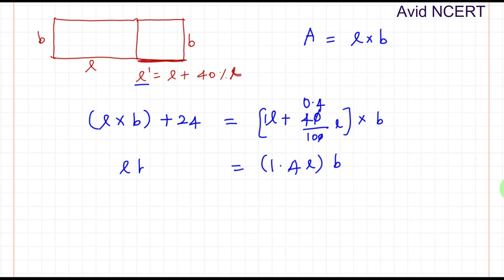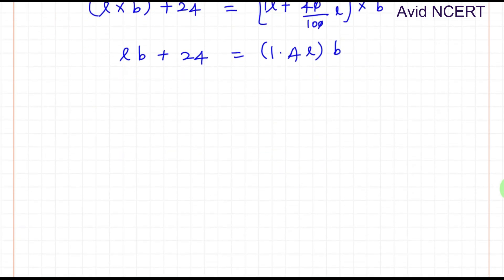So LB plus 24 equals 1.4LB. Rearranging the equation, 1.4LB minus LB equals 24. So 0.4LB equals 24, where LB equals 24 divided by 0.4.